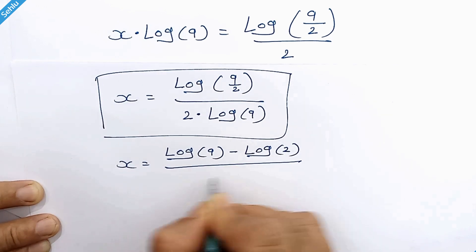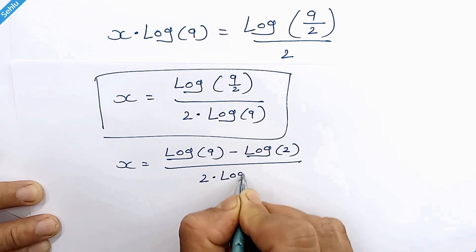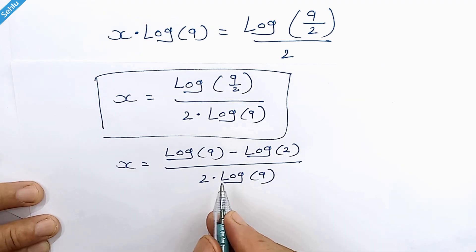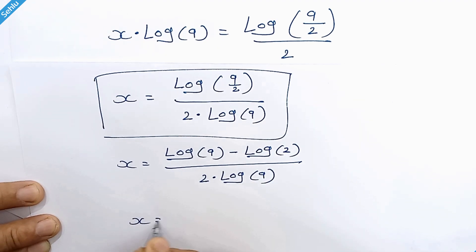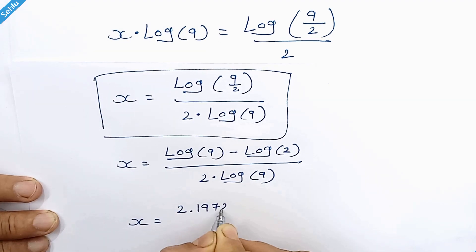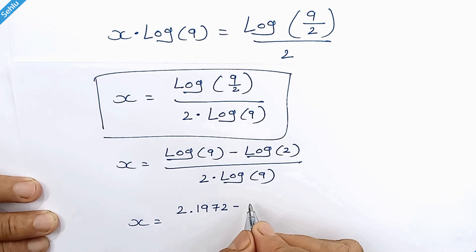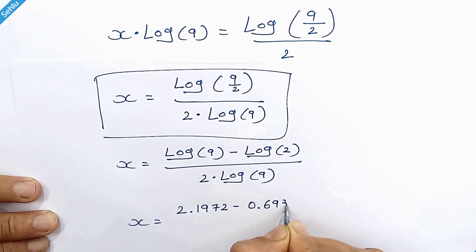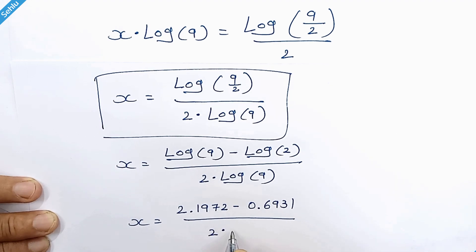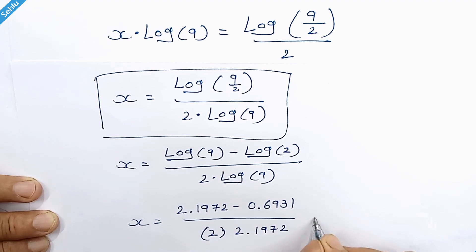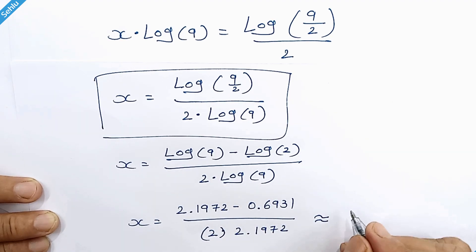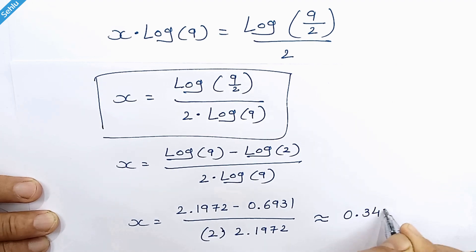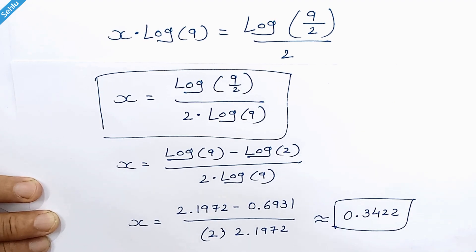For the decimal value: log of 9 is 2.1972 and log of 2 is 0.6931, over 2 times log of 9 which is 2.1972. So x is approximately 0.3422. That's it — thanks for joining, see you in the next one, bye bye.